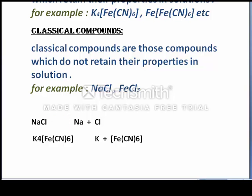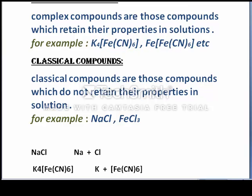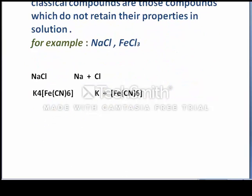And if we see an example for complex compounds, K4[Fe(CN)6]. K4[Fe(CN)6] is a complex compound.